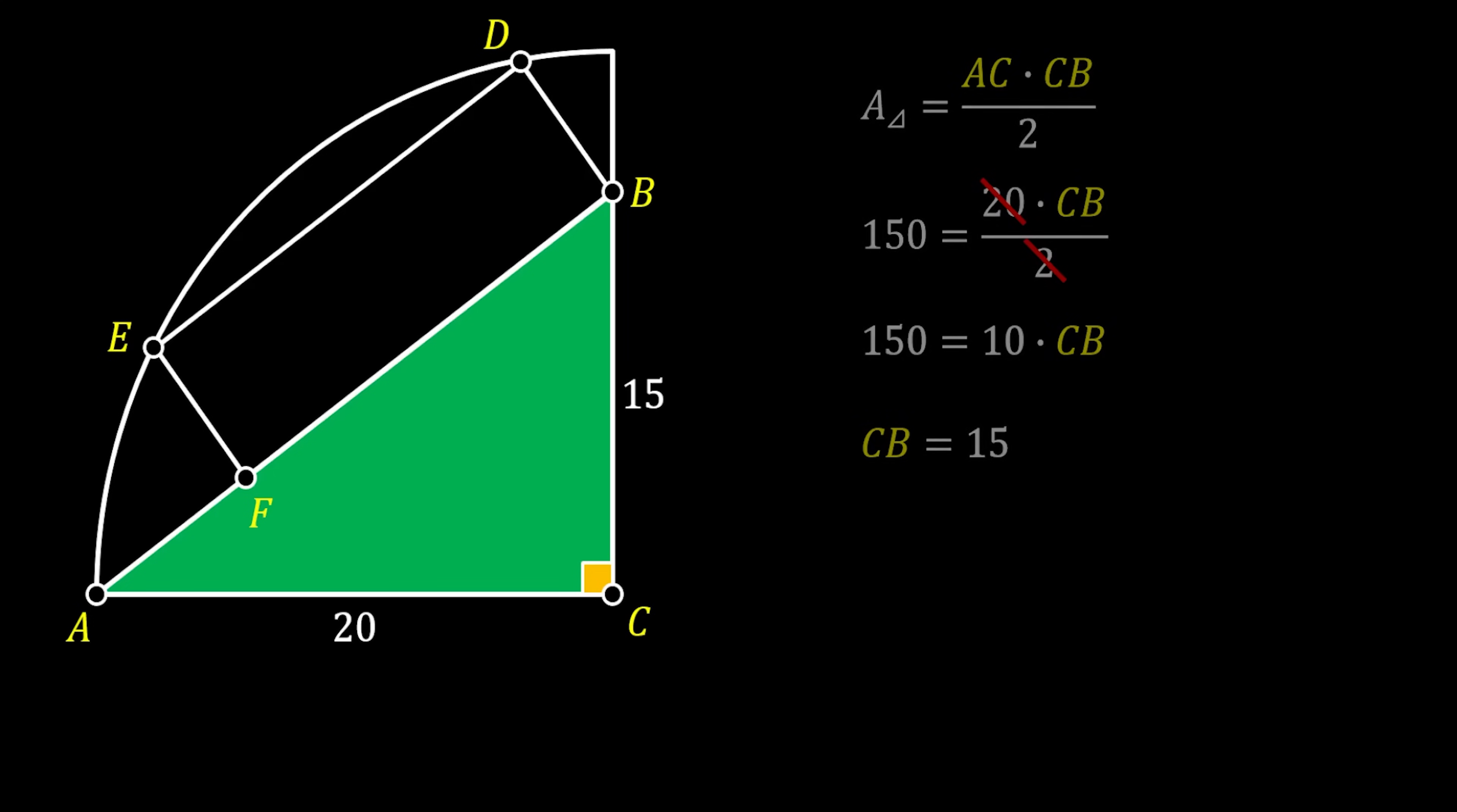Next, we know that our triangle is a right angle triangle. So, we can use the Pythagorean theorem. We can calculate the hypotenuse AB squared as the sum of the leg AC squared and the leg CB squared. We are going to substitute our values, work through this, and we will get that our hypotenuse AB must be equal to 25.